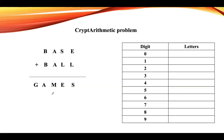In this lecture, let us see another example. The input is BASE and BALL, and if you add both of them the result should be GAMES. In BASE or BALL there are only four letters, whereas in the output we have five letters, so here we need a carry.